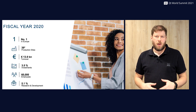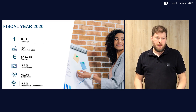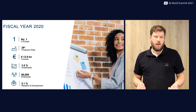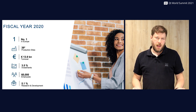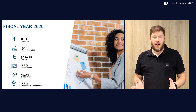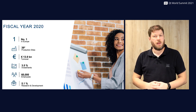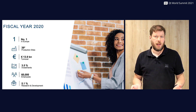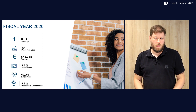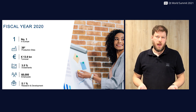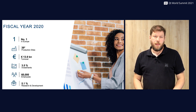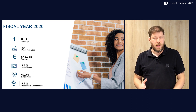Regarding some of the numbers: BSH remains the leading home appliance manufacturer in Europe in 2020 and achieved record sales of 30.9 billion euros despite a challenging start in 2020 and a highly competitive environment. At the end of 2020 BSH employed around 60,000 people worldwide and produces in 39 factories around the globe.